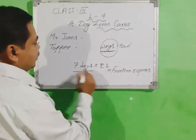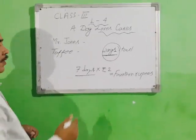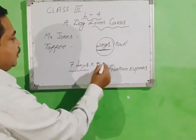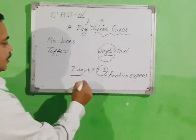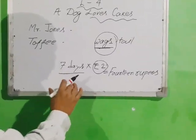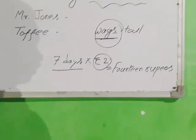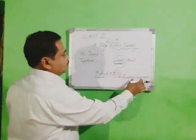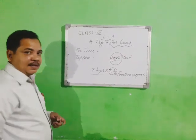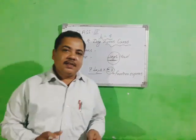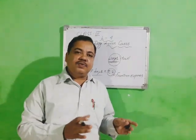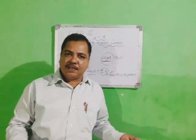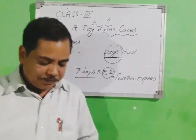In this story, over seven days Mr. Jones gave two rupees each day. So the calculation is: seven days multiplied by two rupees equals fourteen rupees. Fourteen rupees total — we will understand how this is connected as we read the story.